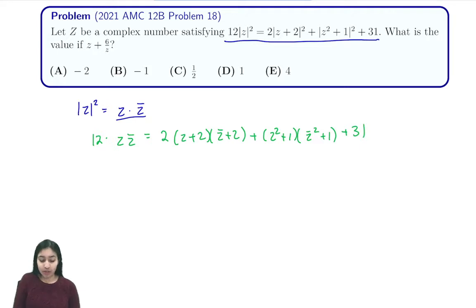So now we're going to expand these expressions and we get 12 z z bar is equal to 2 z z bar plus 4 z plus 4 z bar plus 8 plus z squared z bar squared plus z squared plus z bar squared plus 2 z z bar plus 1 plus 31.